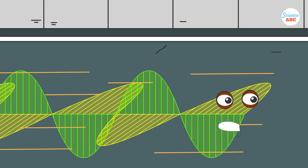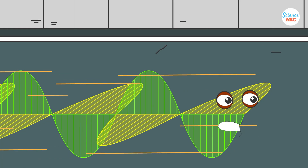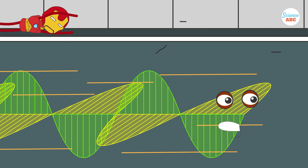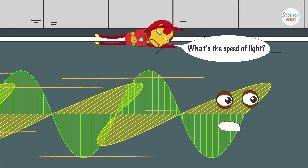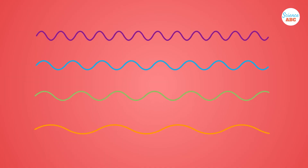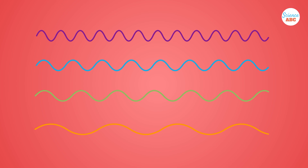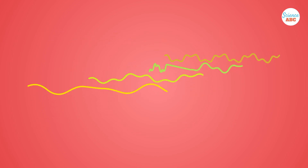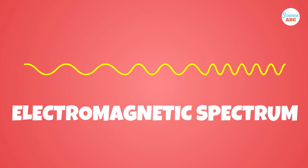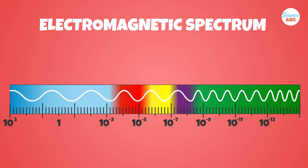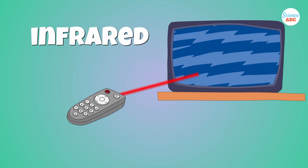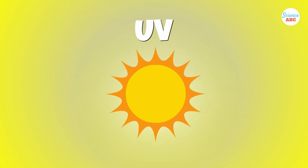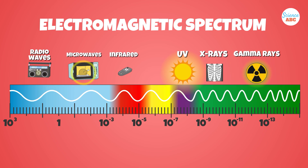These waves travel at the speed of light — brownie points if you can provide the exact value of the speed of light in the comments below. Electromagnetic waves have different wavelengths and frequencies, forming what we know as the electromagnetic spectrum. This spectrum includes radio waves, microwaves, infrared, UV, X-rays, and gamma rays.